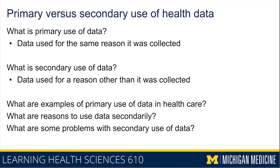This is a consideration for a lot of research done on observational or retrospective data. Often there are considerations you would have taken if you knew you wanted to collect the data for research, but those weren't taken into account because the data was already collected for a different reason. So we're often left making analytical decisions to deal with those imperfections.